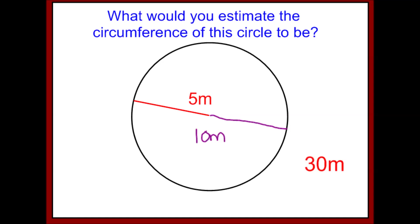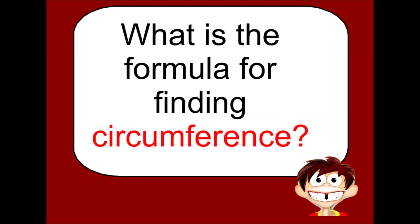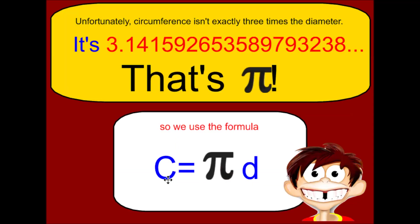It's not exactly 3 times around. The actual formula for finding circumference is pi times diameter, and pi is just a little bit more than 3. In this video, we're going to round pi to 3.14.